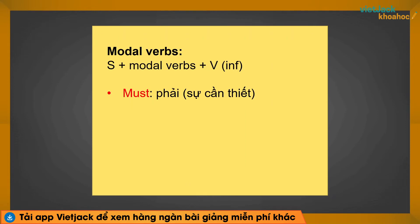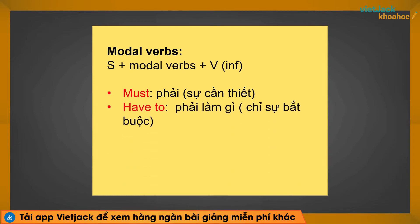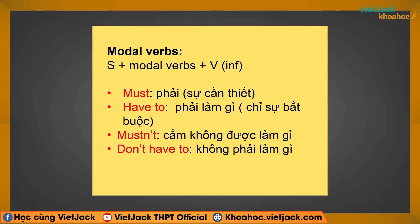Về nghĩa: 'must' là 'phải' — chỉ sự cần thiết từ bản thân người nói. 'Have to' cũng có nghĩa là 'phải' nhưng chỉ sự bắt buộc do tác động từ yếu tố bên ngoài. 'Mustn't' là 'cấm không được làm gì' — không liên quan đến must. 'Don't have to' mới là phủ định của must hoặc have to — có nghĩa là 'không phải làm gì'. Và 'needn't' là 'không cần làm gì'.